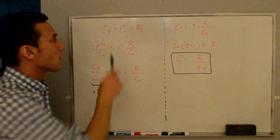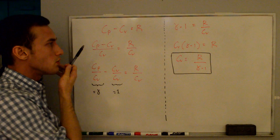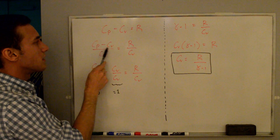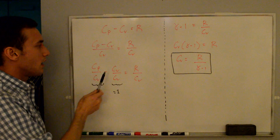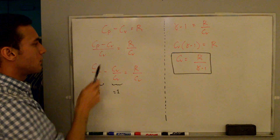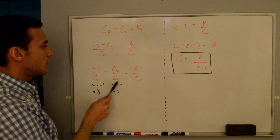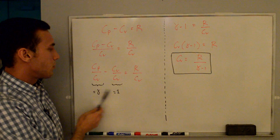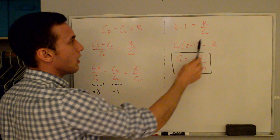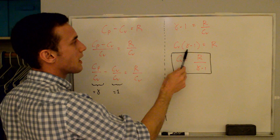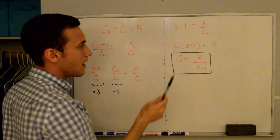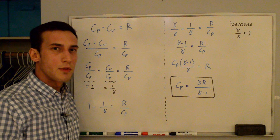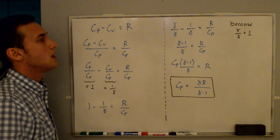First, let's solve for cv. Starting with cp minus cv equals R, the trick is to divide by the specific heat you want to solve for — so divide both sides by cv. We get cp/cv minus cv/cv equals R/cv, which gives gamma minus 1 equals R/cv. Multiplying both sides by cv and dividing by gamma minus 1, we get the final expression: cv equals R over gamma minus 1. So cv is a function of gamma and R.